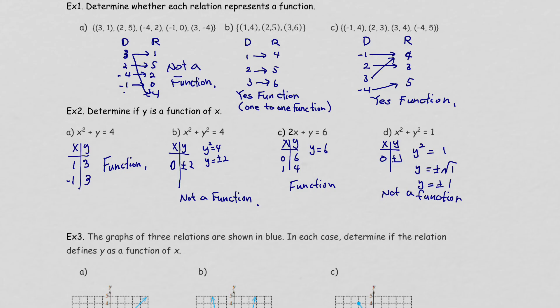From looking at equations, you can tell: if you have y itself — y with an odd exponent like y to the first power — it will be a function. When y is raised to an even power, to eliminate that even power you need the ± sign, which gives two solutions for one x. So that is useful knowledge as you start doing homework.